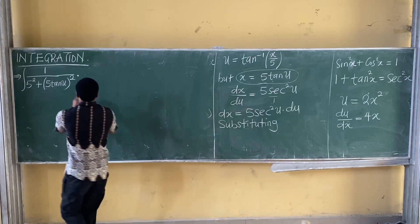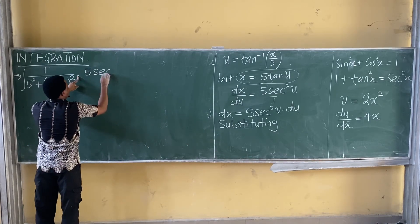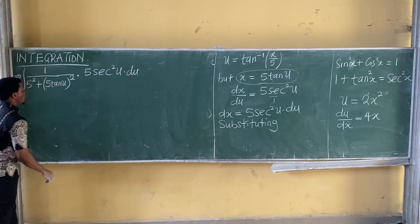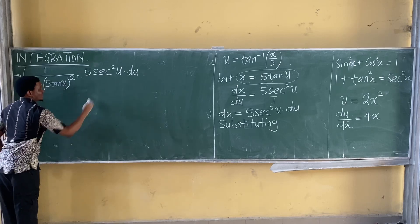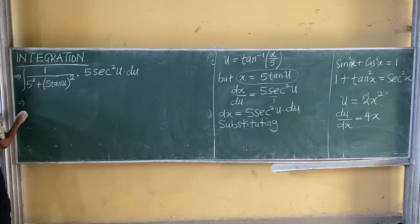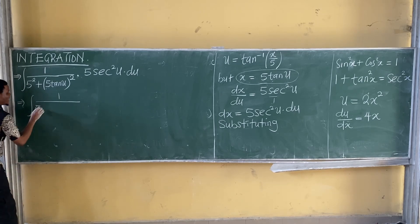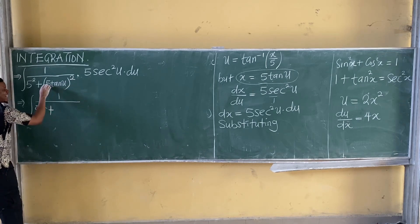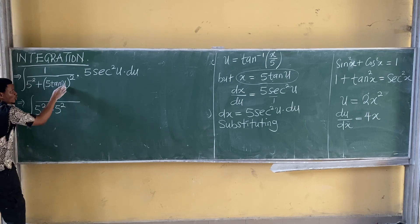Let's put in the dx. Please check — what is dx? It's 5 sec squared u dot du. Now observe something here. Watch this carefully. This becomes the integral of one all over what I have here: five squared. Please help me expand this square — five squared, then tan(u) squared over there.